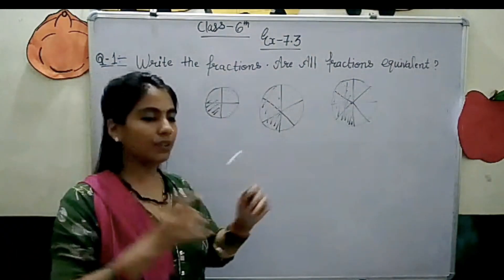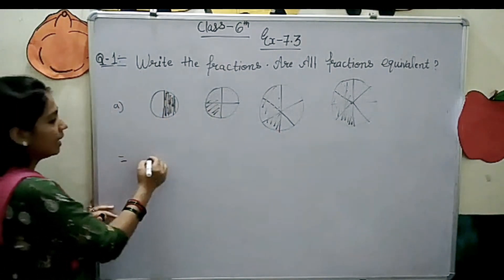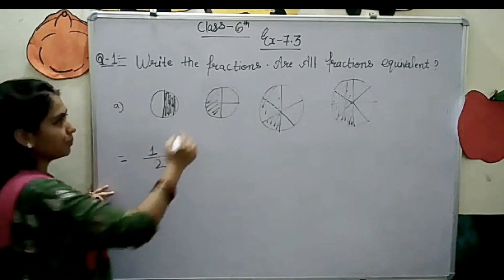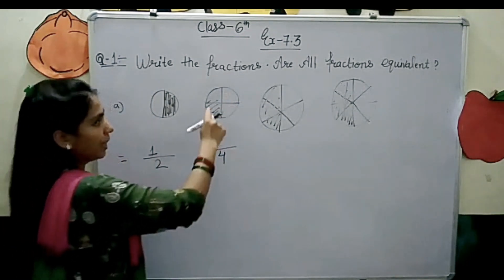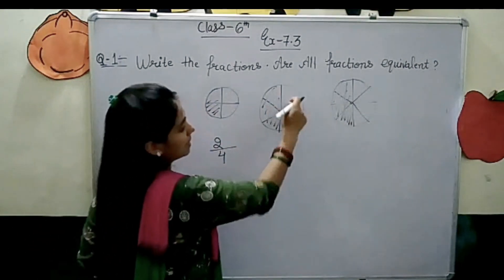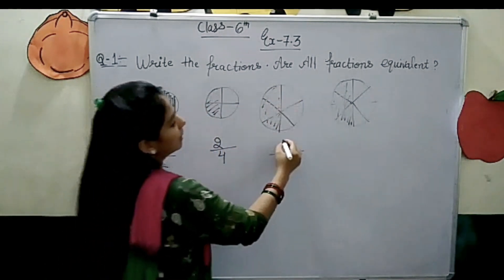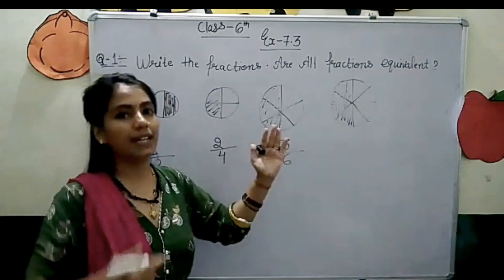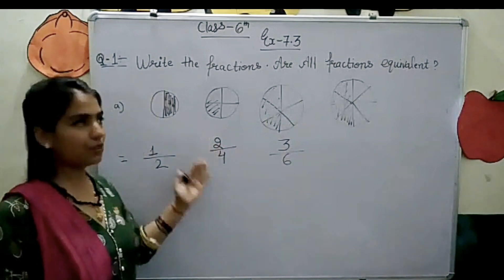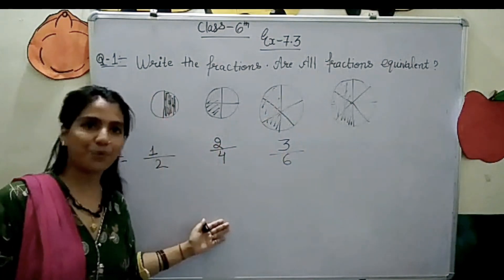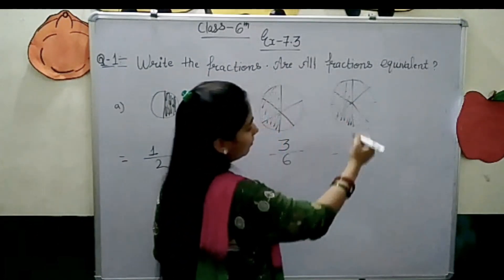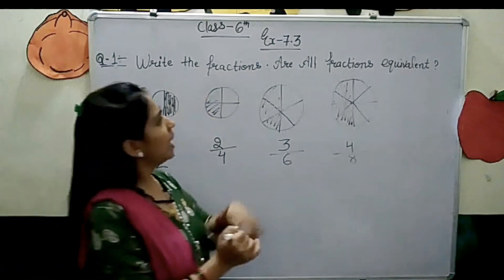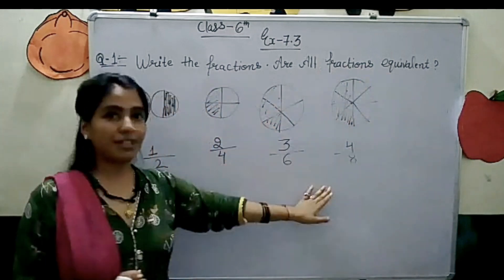We have to write the fraction for these figures. You know how to write a fraction — denominator is the total number of equal parts, numerator is the filled parts. So the first figure has 2 equal parts, filled is 1: fraction is 1 by 2. Second one: total parts 2, filled 2. Third one: total parts 6, filled 3 — fraction is 3 by 6. The next figure: total parts 8, filled 4 — fraction is 4 by 8.